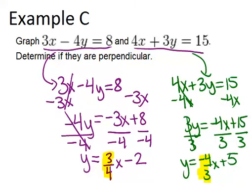Well, because these two slopes are opposite reciprocals, that means that the two lines are perpendicular. So we can say, are they perpendicular? Yes.